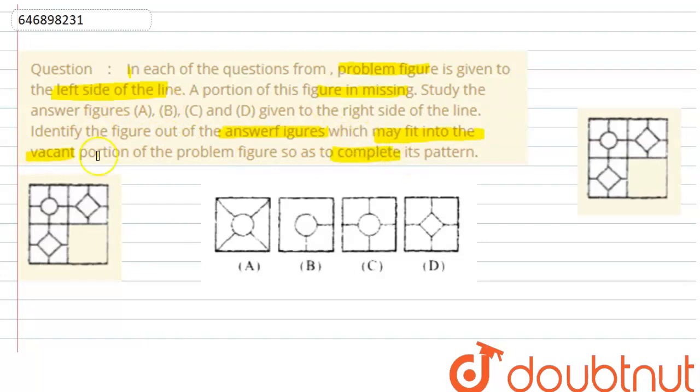So basically, we're saying that on the left side, you have a problem figure. Some part is incomplete. We can see that incomplete part needs to be completed.